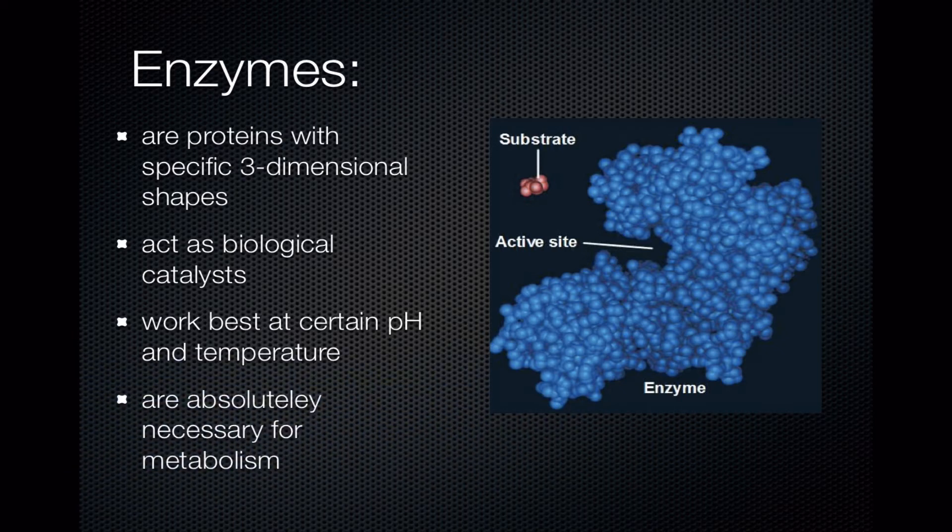Enzymes are absolutely necessary for metabolism. There are many things in the human body that if they don't work properly — for example, if you have a metabolic disease — a lot of times these can be traced back to enzymes that are not being built properly because there's a mutation somewhere in the genetic code that codes for that protein.